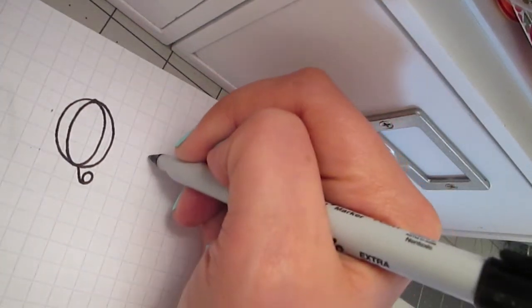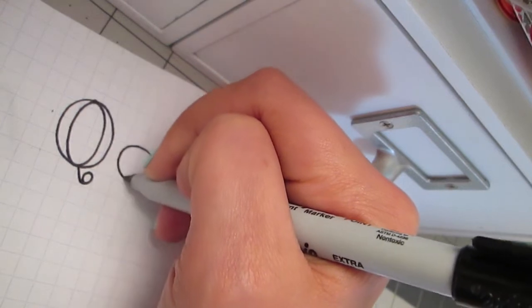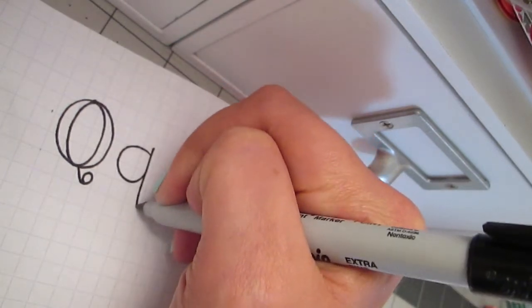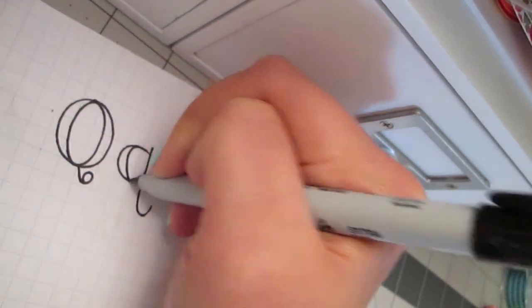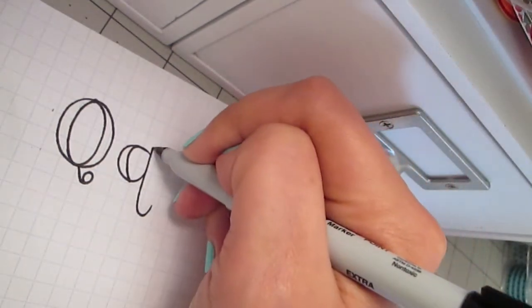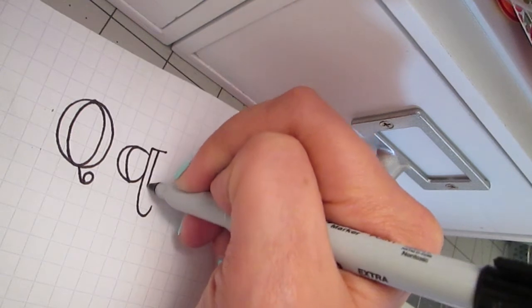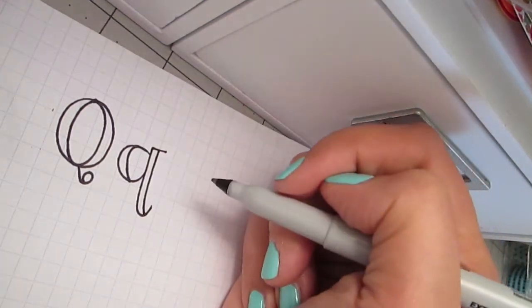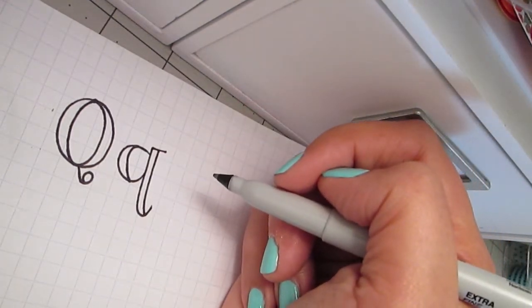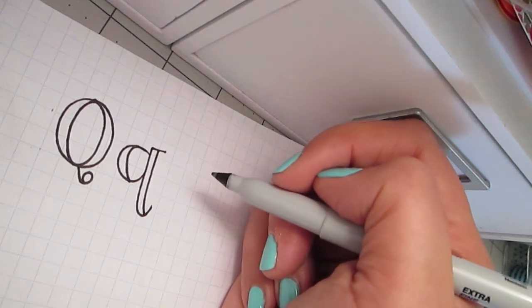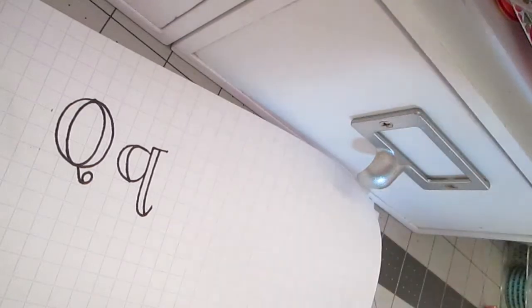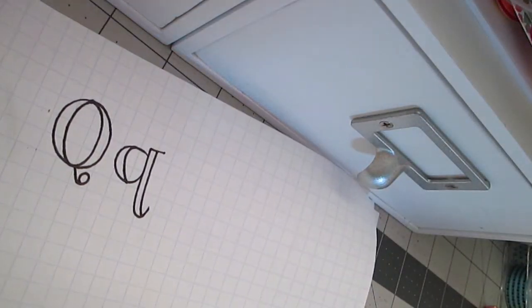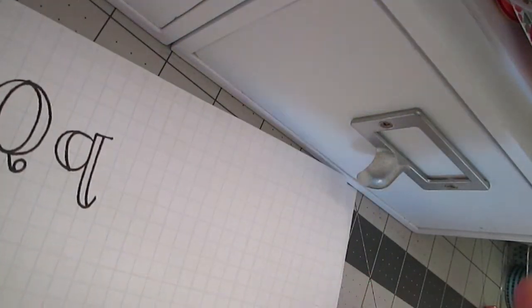For the lowercase Q, you kind of draw your Q, and then you do your inside part of the Q, and then you add your serif and bring it down. And that's how I do lowercase Q. I make it as easy as possible. I don't add a whole bunch of bells and whistles to it because Q's are a pain in the ass, and you don't have to do them very often. So, you might as well not make it too hard on yourself.